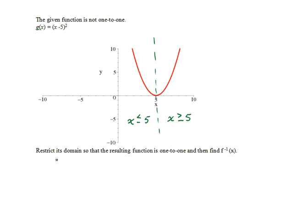The most common way to proceed would be to use the interval from 5 to infinity, including the 5. If we use that, notice that as a result x minus 5 is greater than or equal to 0, because if x is greater than or equal to 5, then x minus 5 is greater than or equal to 0.